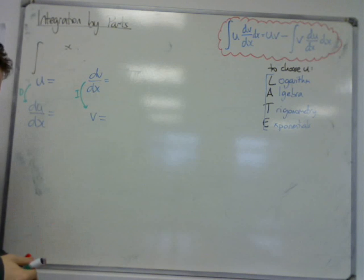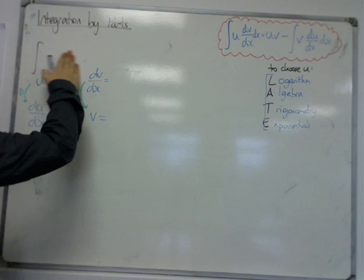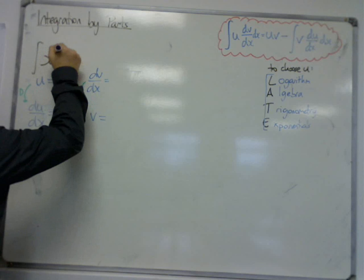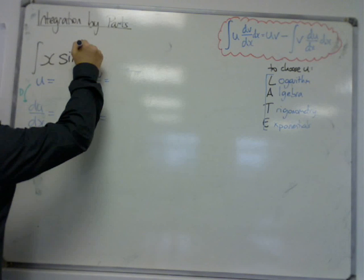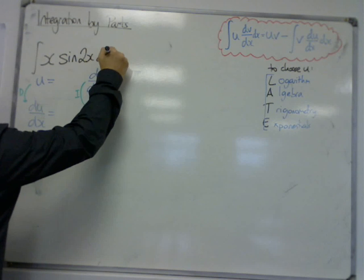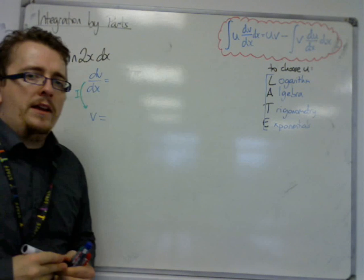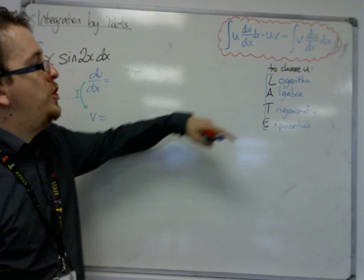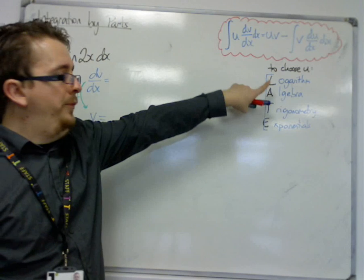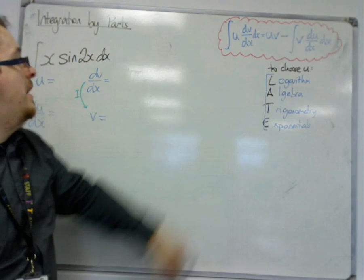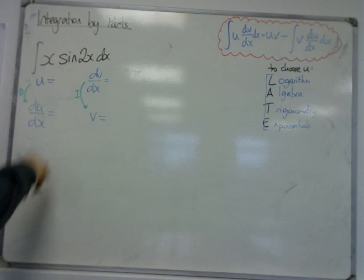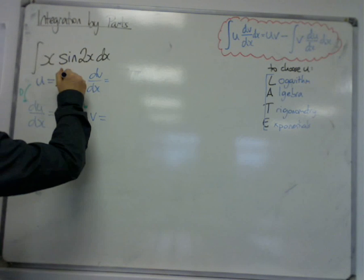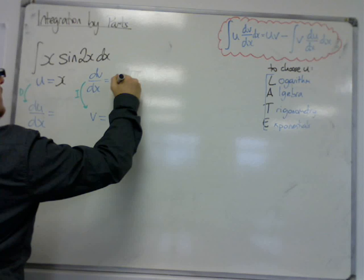Now the example I'm going to try now is going to be x sin 2x. So looking down on this to choose u, we don't have any logarithms. The first one we come across is the algebra. We do have a polynomial, we have x, so u is equal to x, and dv/dx must be sin 2x.